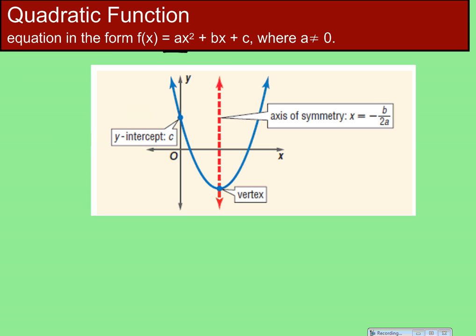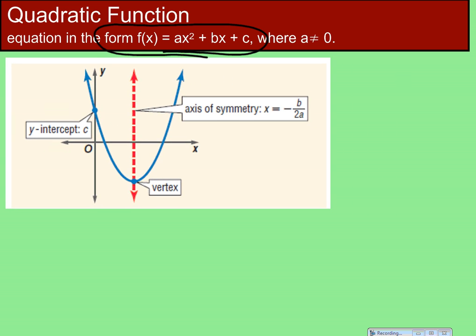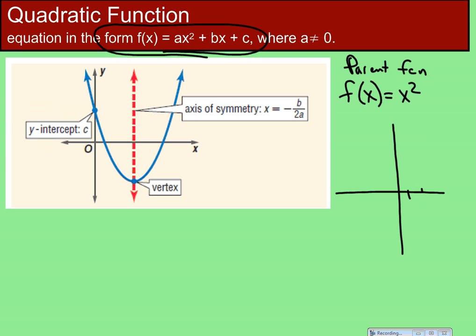A quadratic function is in some way, shape, or form ax² + bx + c — that's standard form. Let's look at the most simple, basic parent function of a quadratic. The parent function is just x², and if you graphed it in a calculator it follows a simple pattern.